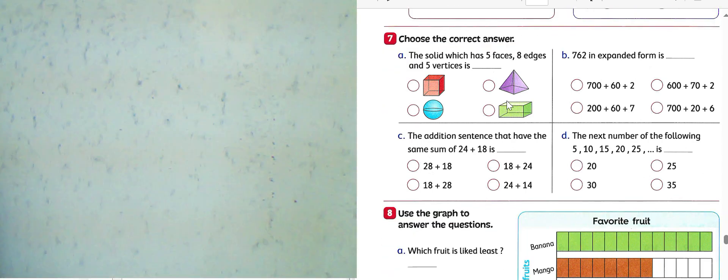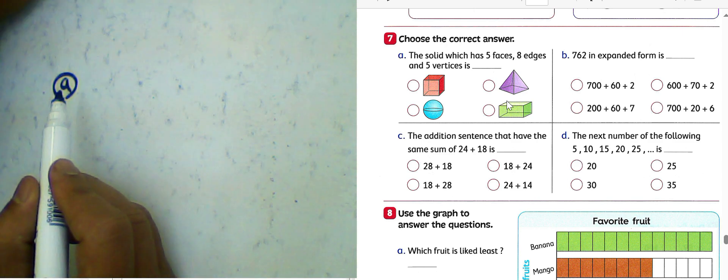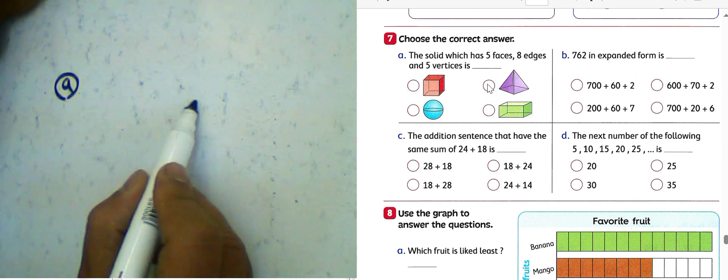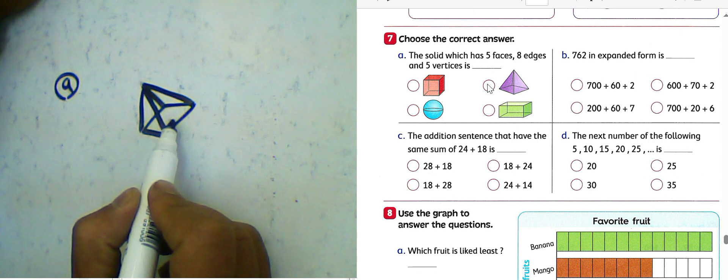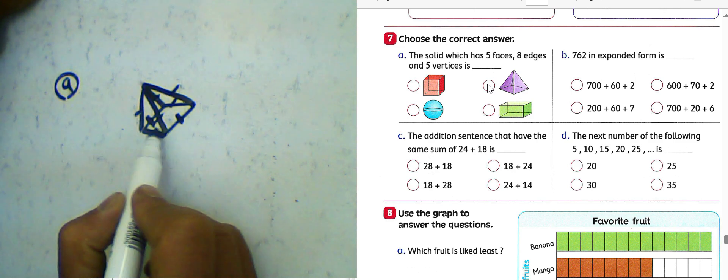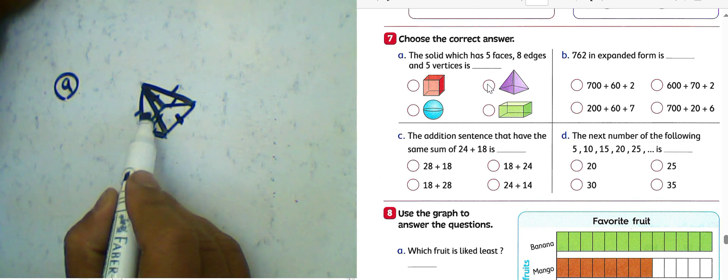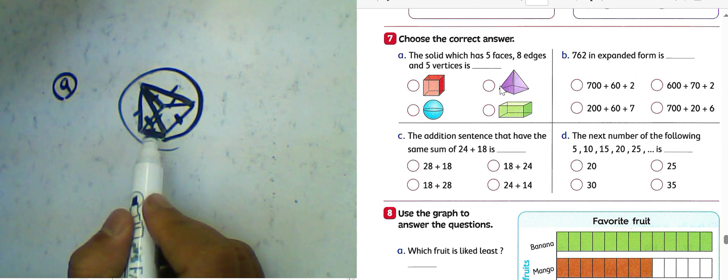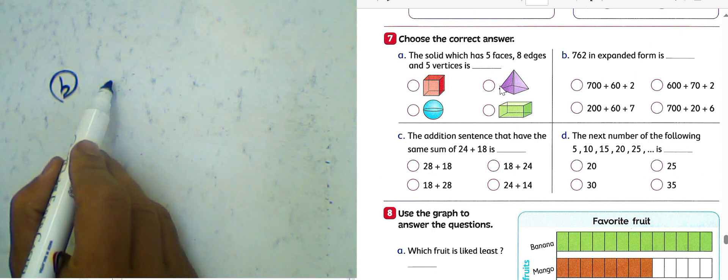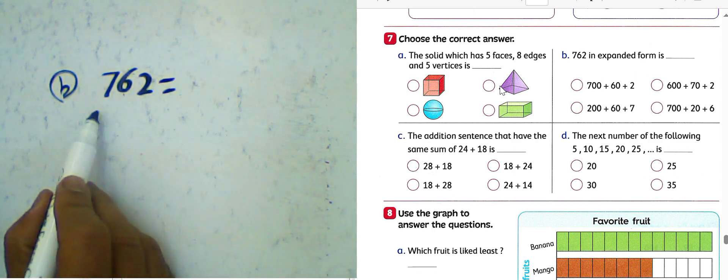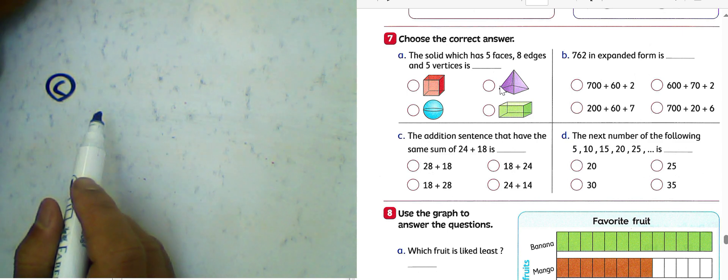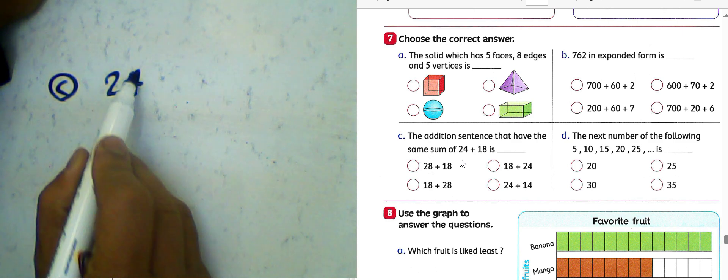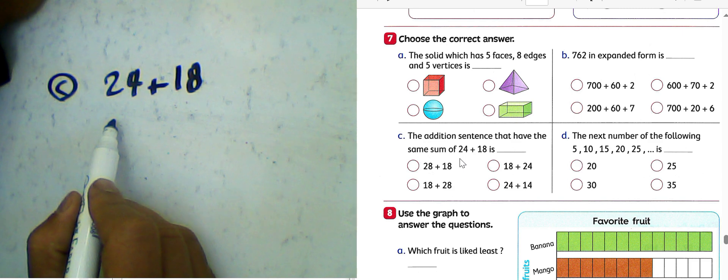Question number 7: choose the correct answer. Letter A: a solid which has 5 faces, 8 edges, and 5 vertices. We must choose square pyramid. Square pyramid has 5 faces, 8 edges, and 5 vertices. Question letter B: 762 expanded form, it will be 700 plus 60 plus 2. Question letter C: the additional sentence that has the same sum of 24 plus 18, it's equivalent to 18 plus 24. We used commutative property.